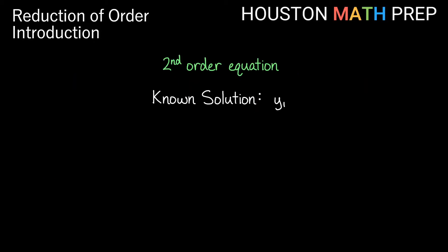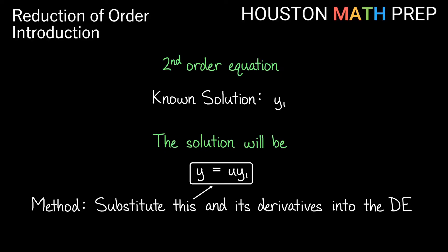In the second-order equation, if we call the solution that we already know y1, then our solution is going to be y equals u times y1, where u is just some other function of x. Once we know u, we have the entire solution because we already know y1. Our method is to substitute u times y1 into the equation and all of its derivatives — you may have a y' term and certainly a y'' term — and be able to reduce it to a first-order equation.